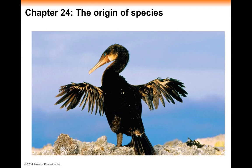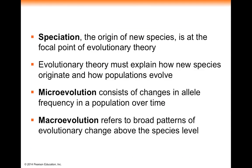Chapter 24: The Origin of Species. The theory of evolution by means of natural selection suggests that what species are is not what species have always been or what they will always be. So this suggests that boundaries between species are not always going to be as rigid as you might think.